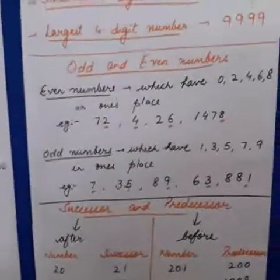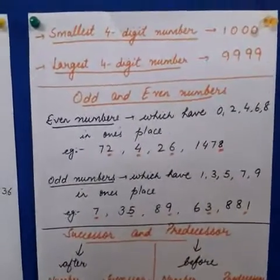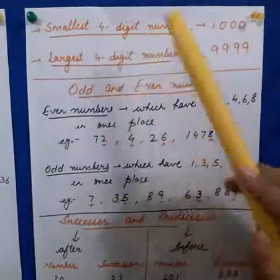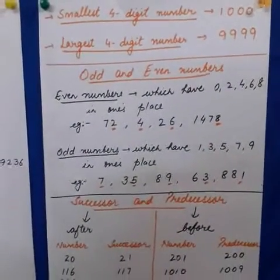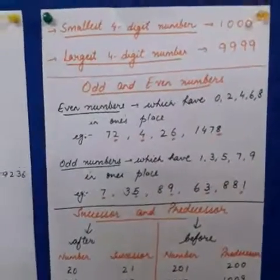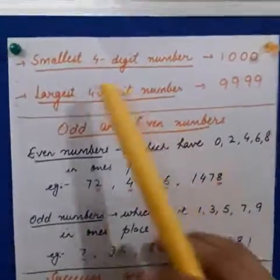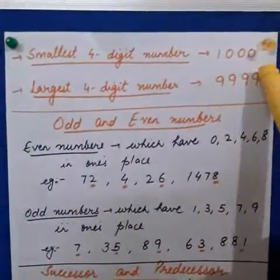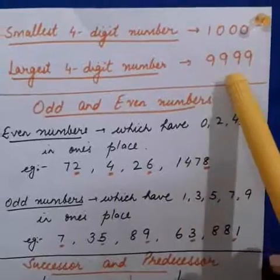Moving to the next part. Since we are studying 4-digit numbers, let us see what is the smallest 4-digit number. The greatest 3-digit number is 999. So when we add 1 to it, it will become 1000. And that 1000 is a 4-digit number. So, the smallest 4-digit number is 1000. The largest 4-digit number is 9999.